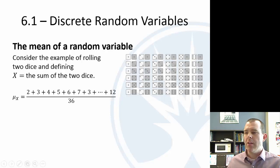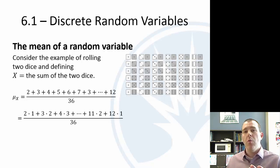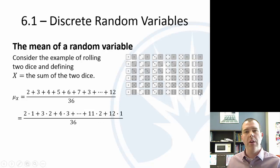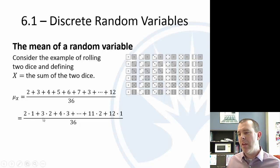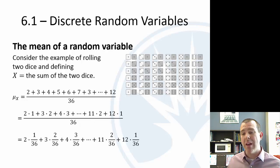If we look at the mean, we could think of it like a weighted mean. There is one 2, two 3's, three 4's, all the way down to two 11's and one 12. If we rephrase this and break it up into fractions — 2 times 1/36, 3 times 2/36, 4 times 3/36, and so on down to 12 times 1/36 — those fractions are the probabilities. So 1/36 is the probability of getting a 2, 2/36 is the probability of getting a 3.